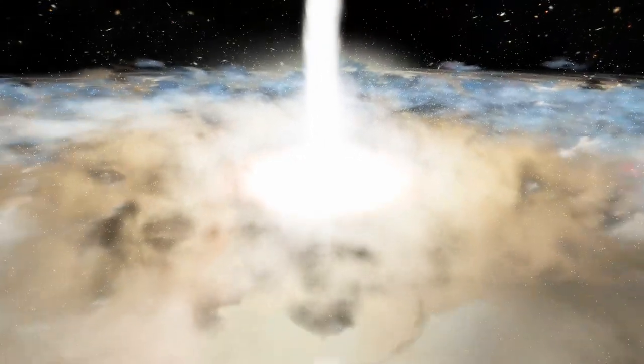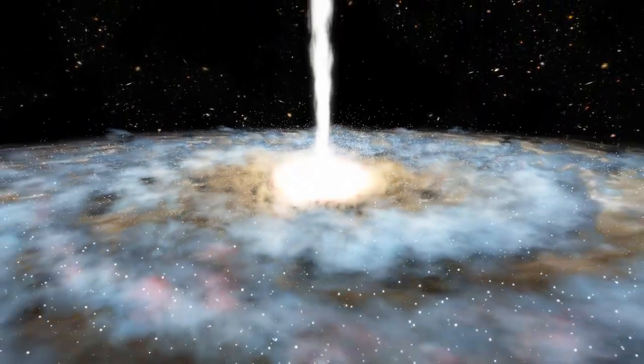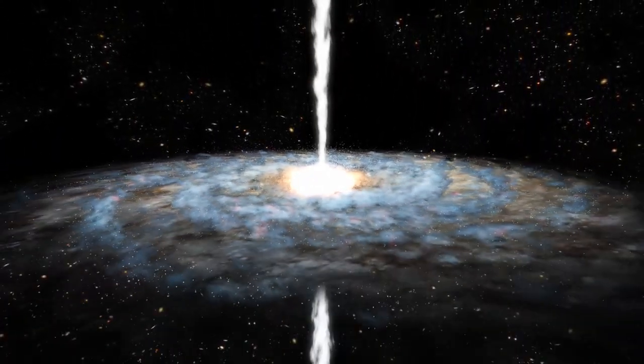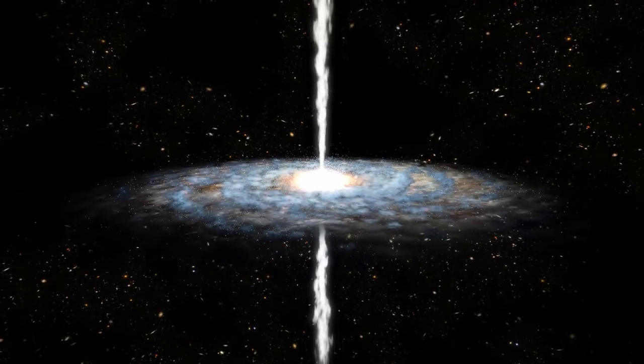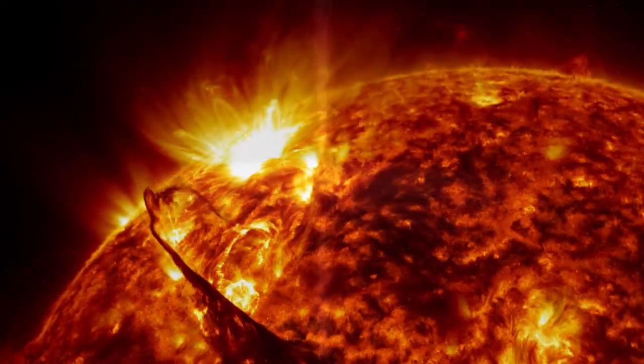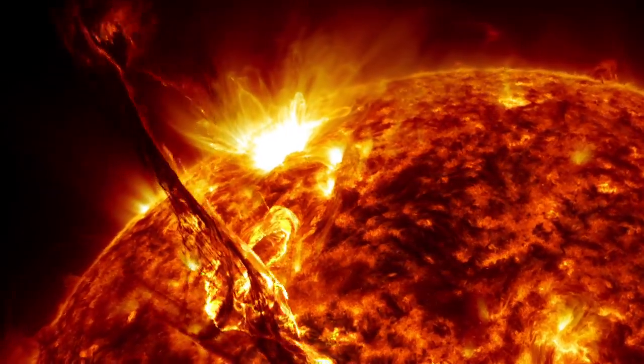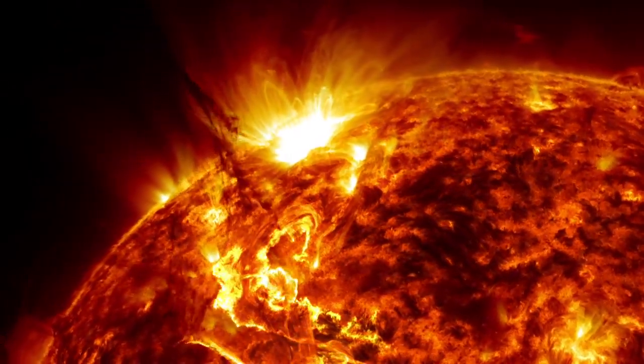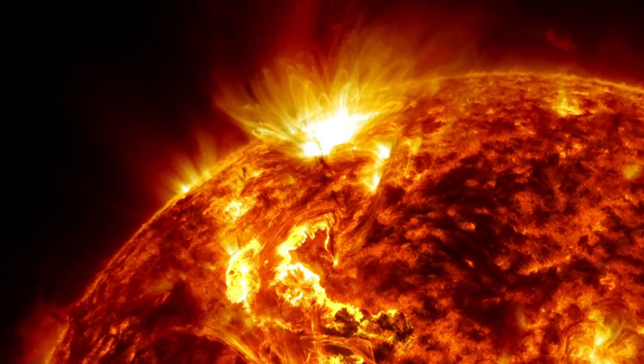Like rubber bands, these magnetic fields can stretch until the point where they snap, releasing massive amounts of energy and heating the gas to millions or even billions of degrees. You can see this in the magnetically active corona of our sun, where superheated gas shines very brightly in X-rays.